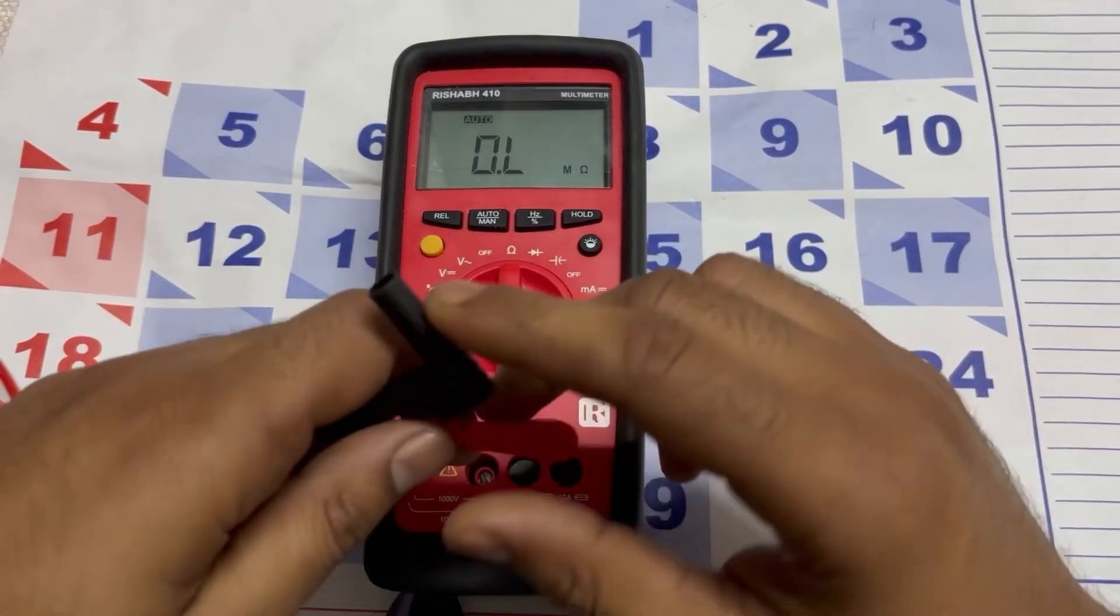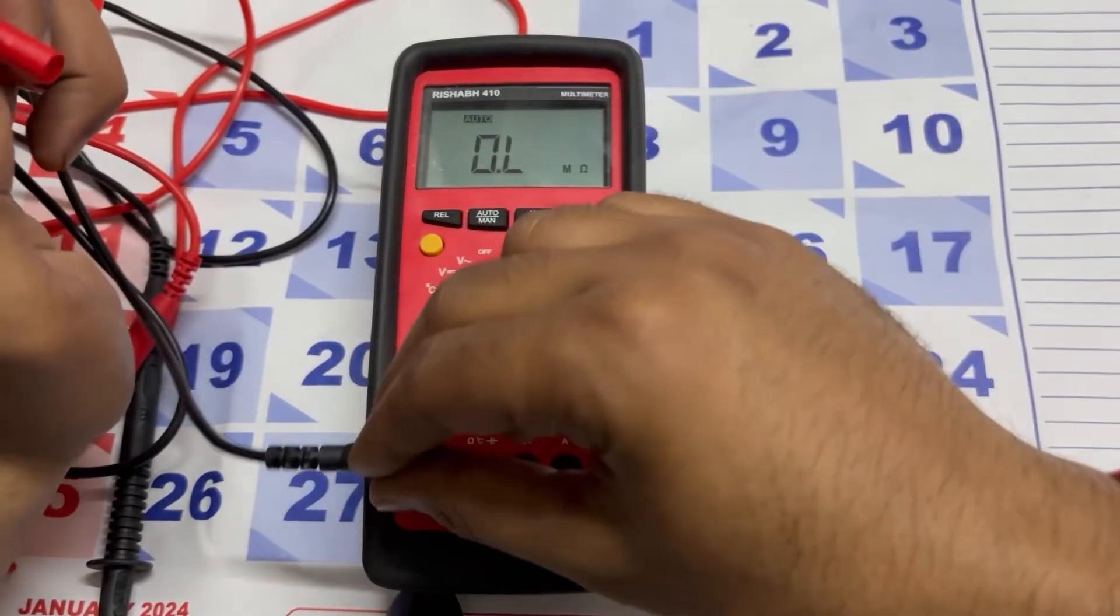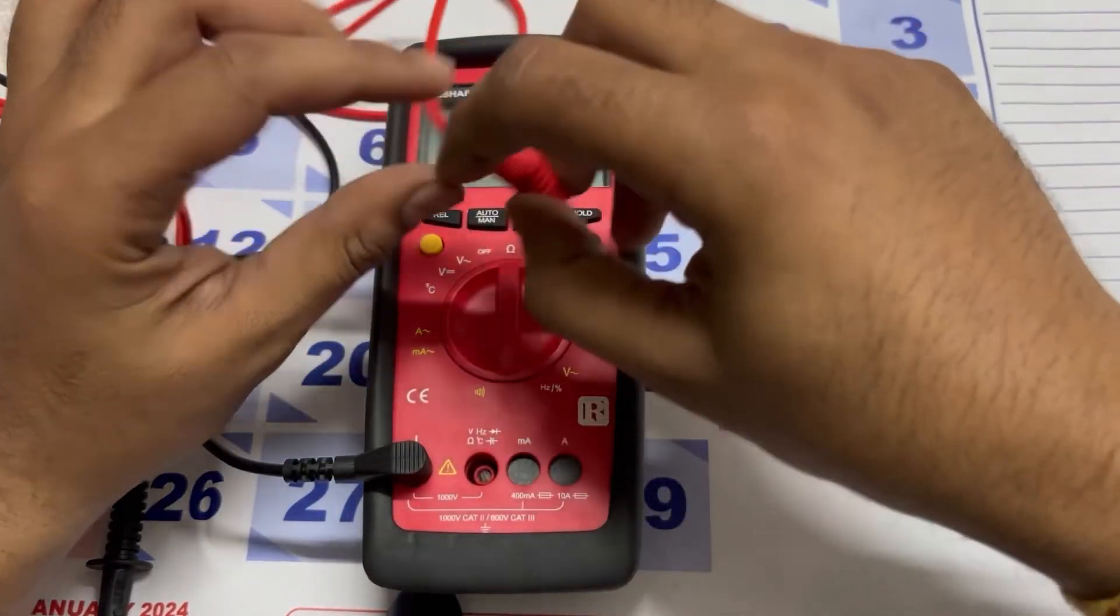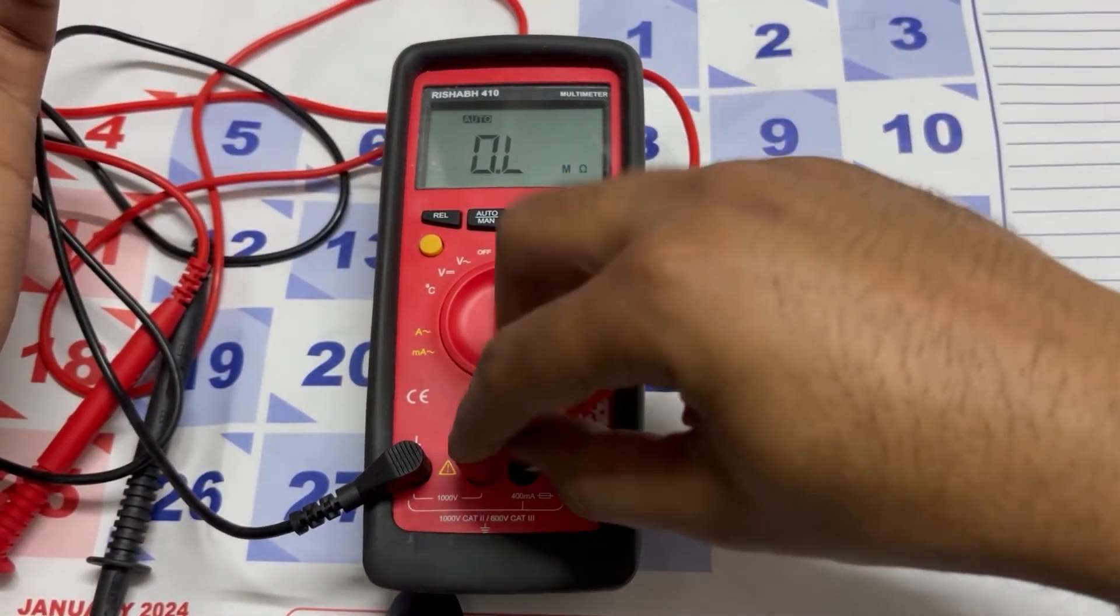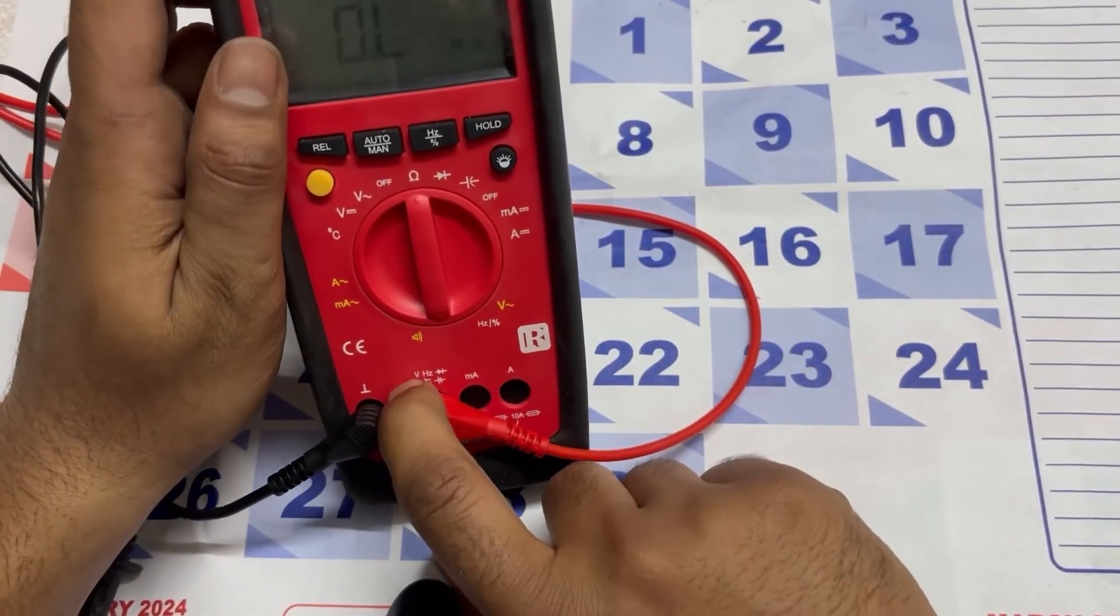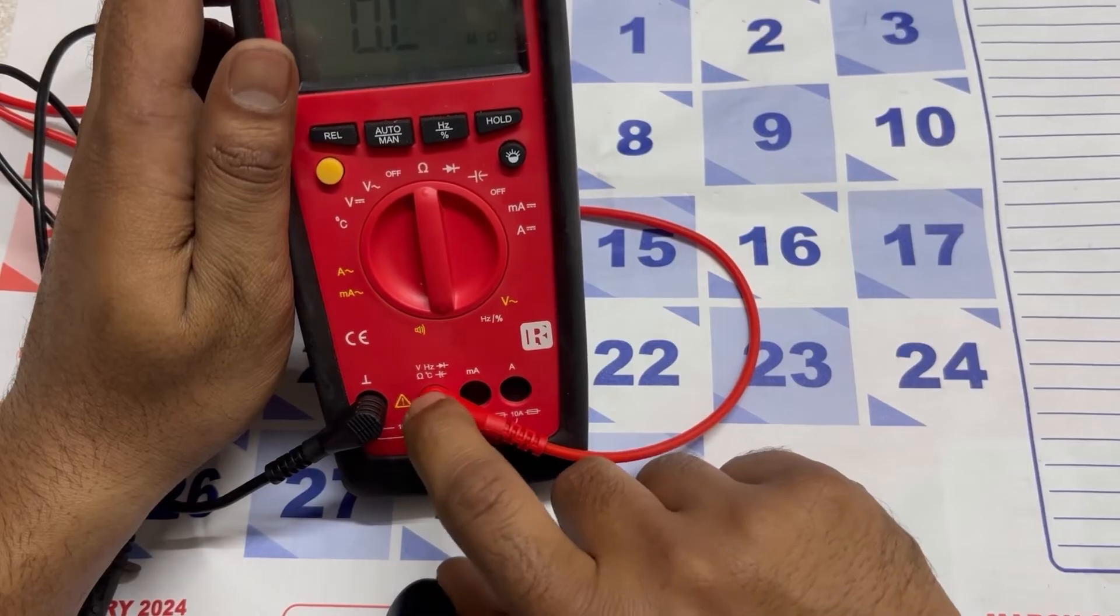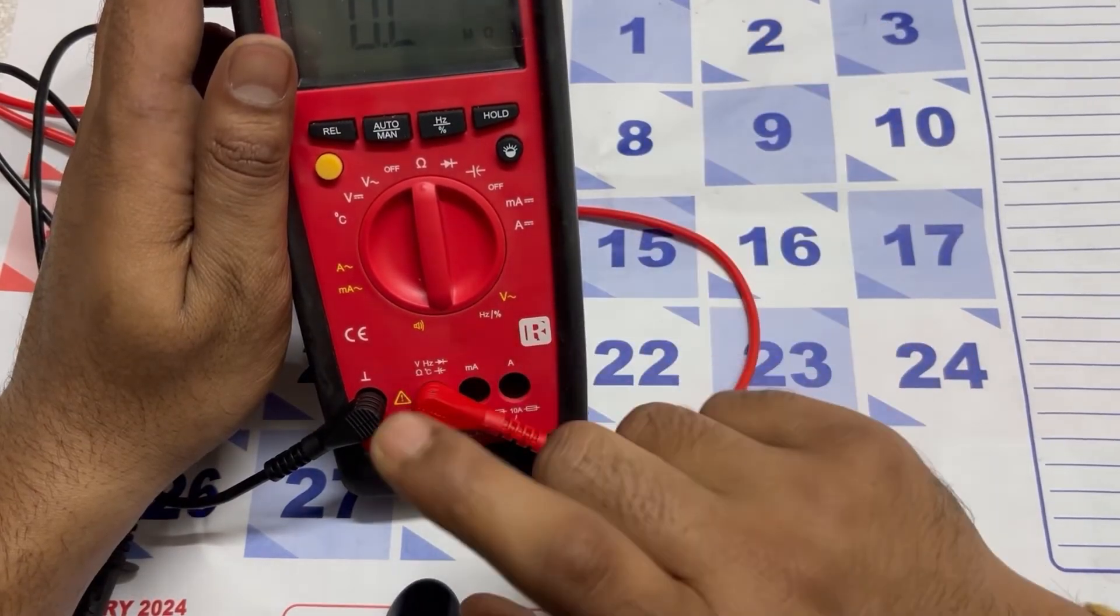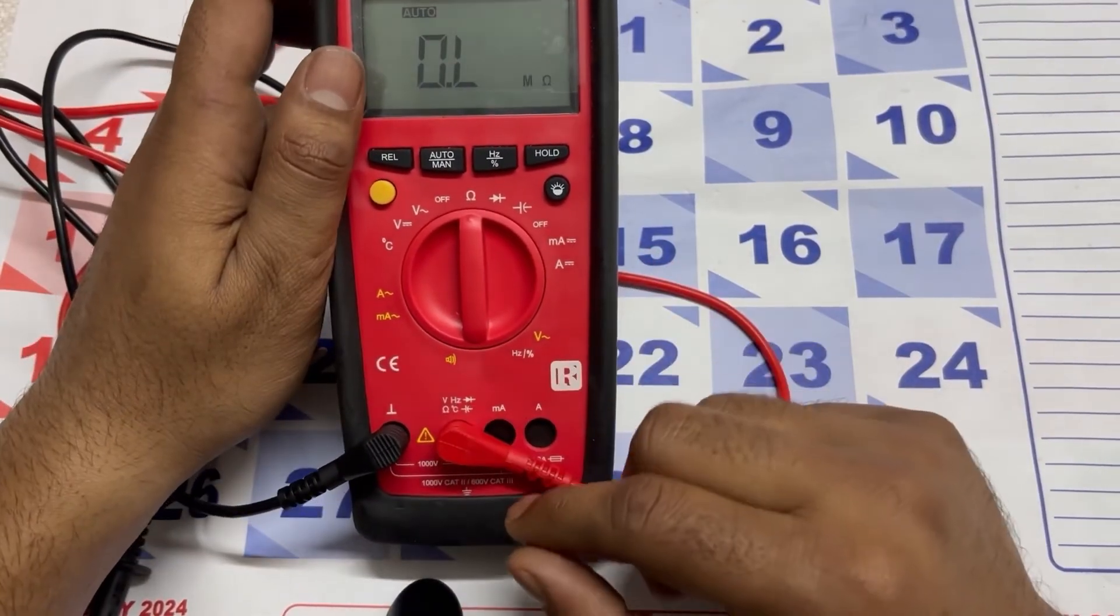These probes come with the multimeter. You can insert the negative probe here for checking voltage, hertz, and current. You can set the red probe here. You can check voltage, frequency, diode, resistance, temperature, and capacitance by inserting the probe on this port.